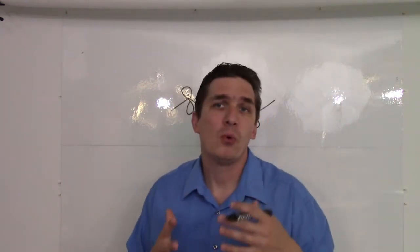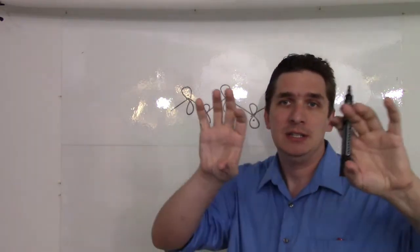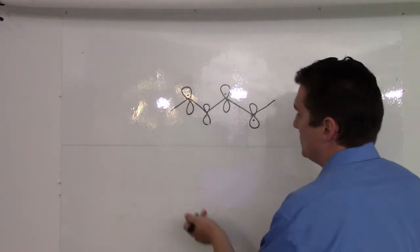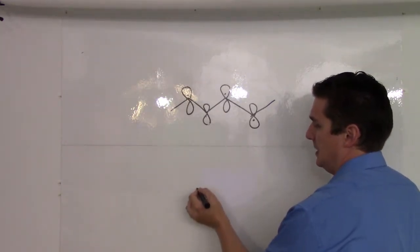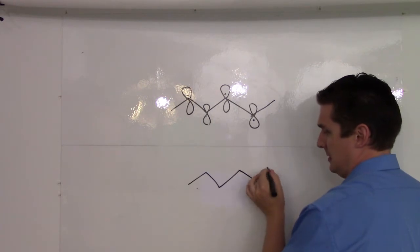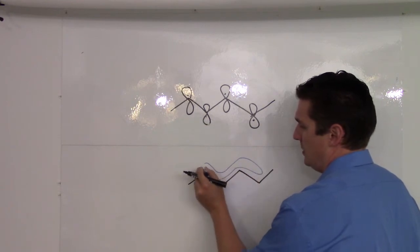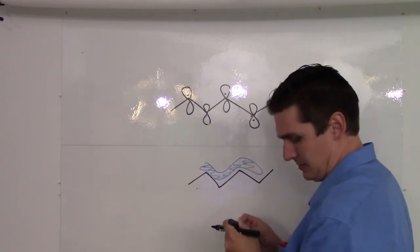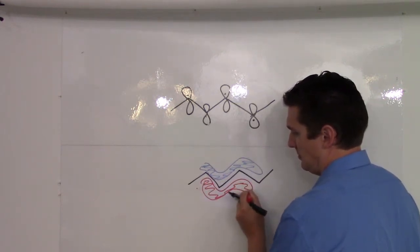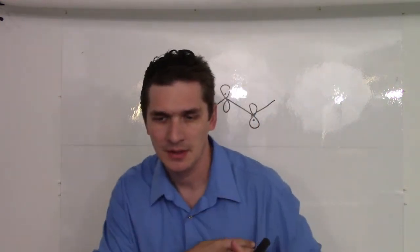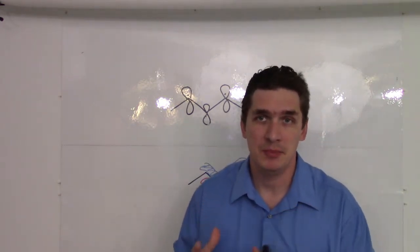This puts all four p orbitals in phase, meaning that if we line them up in a row and add them together, we get one continuous electron density. So our lowest energy orbital here is going to be the addition of all four. And if I were to draw that out, I would have something that looks sort of like this weird, long, snake-like orbital.